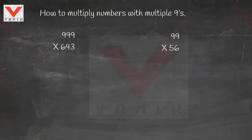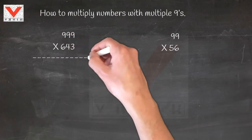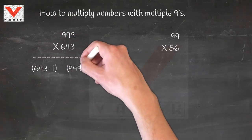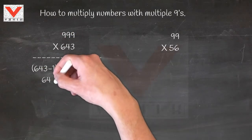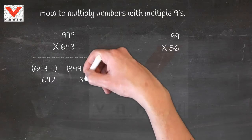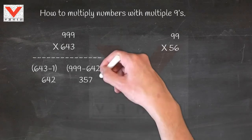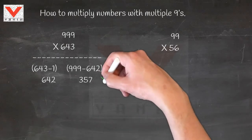First, we subtract 1 from the given number: 643 − 1 equals 642. Then, to get the remaining three digits, we do the subtraction 999 − 642, which equals 357. We then get the multiplication result: 642357.